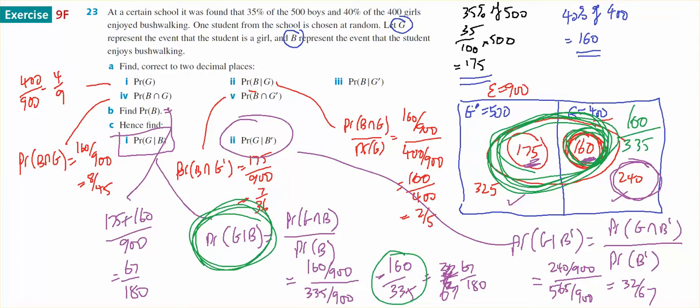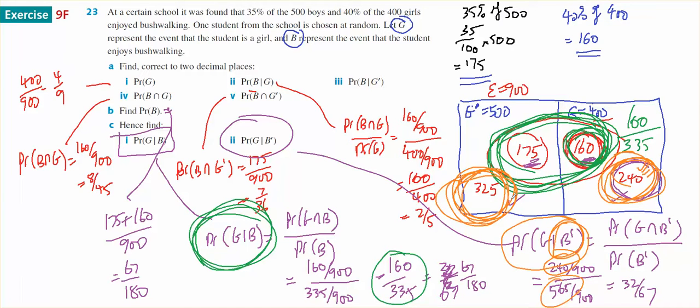If I was to try and consider this situation, what I have is I must be a non-bushwalker, so I'm now out of these two because they're the total of my non-bushwalkers. That gives me 565. To be a girl I've got to be on this side, so 240 out of 565. So sometimes with the conditionals and a Venn diagram or a probability table you can see the conditional, but the rule will always work.